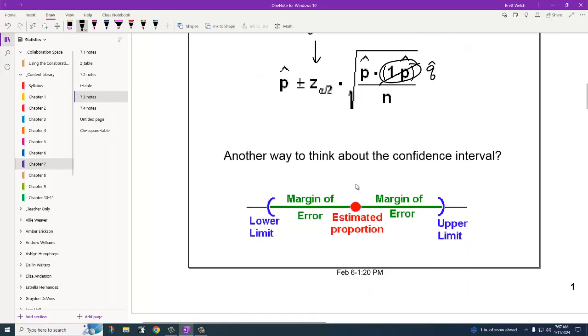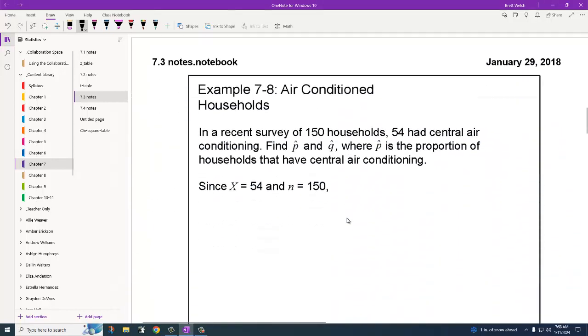Really, what we're doing is we're coming up with a P hat, and we're saying that the true proportion is going to be somewhere in this margin of error. We've been talking about this bubble that we make around our estimate so we can cover our bases and make sure we have everything.